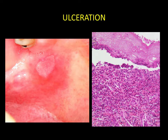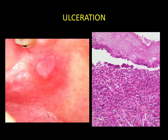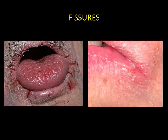Ulceration. This corresponds to a loss of deep substance involving the epithelium and the connective tissue. An ulceration is covered with fibrin, which gives it a yellowish colour.